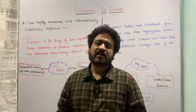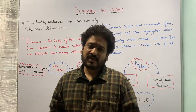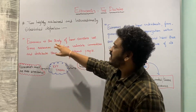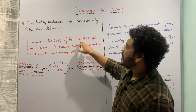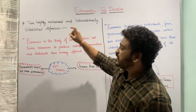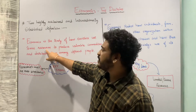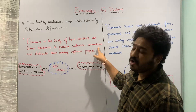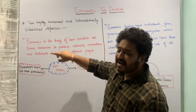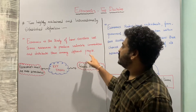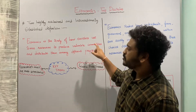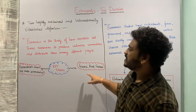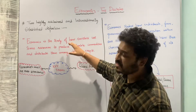The first definition states that economics is the study of how societies use scarce or limited resources to produce valuable commodities — goods or services — and distribute them among different people. The key idea here is that goods are scarce, and the resources being used to produce them are also scarce.